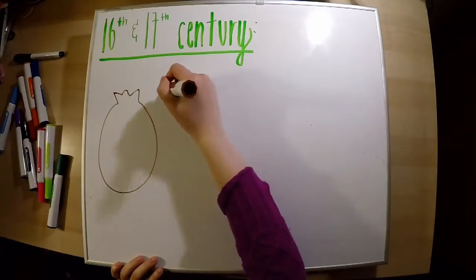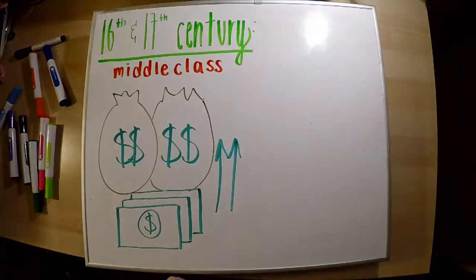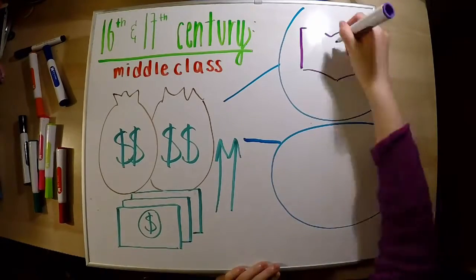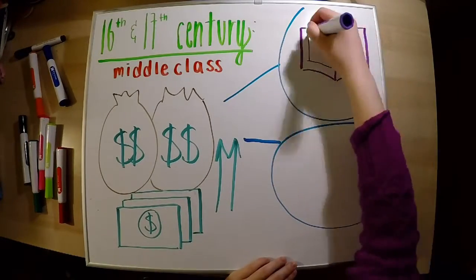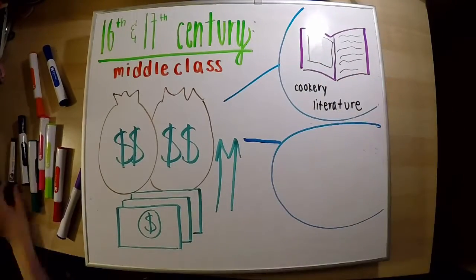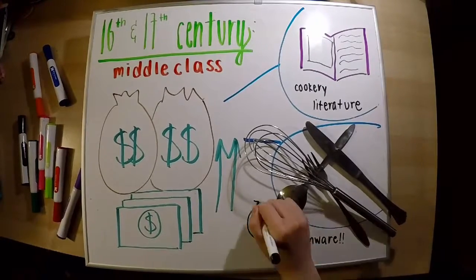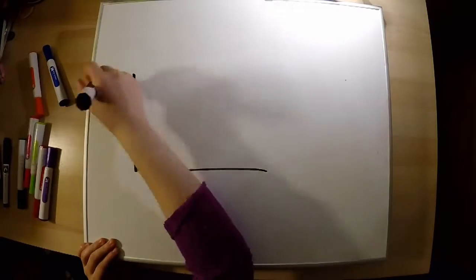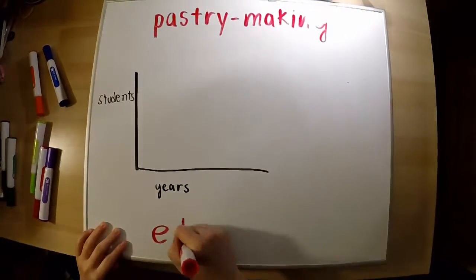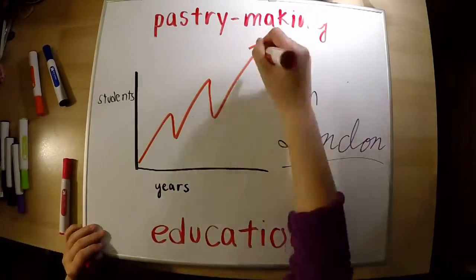In the 16th and 17th century, the middle class grew richer and had more money to spend on baking and cooking. Because of that, their cookery literature grew, and more books about cooking and baking were written, as well as kitchenware — the stuff that we use every day. Because of all of this boom in cooking and baking, the education for pastry making became really popular in London.